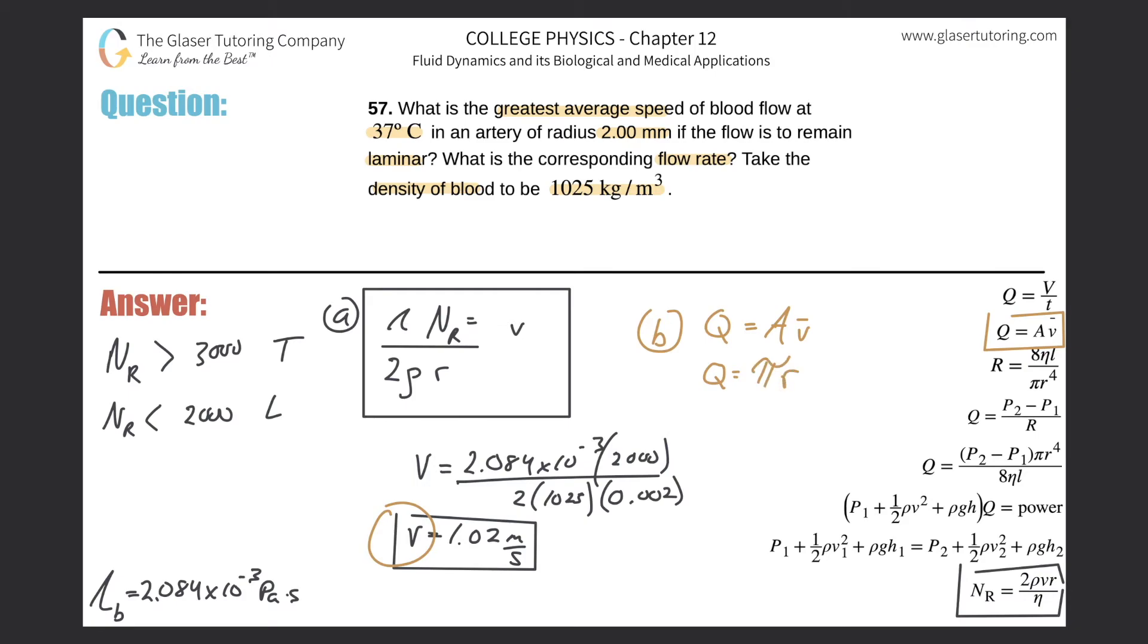We do know the area because area is just π r squared, multiplied by the average velocity. We know the radius of the artery; we used it before. All we have to do is plug in the values: 0.002 squared times that velocity value of 1.02. You could substitute the full equation for velocity if you want the overall equation, but if we just want the number, plug in these values.